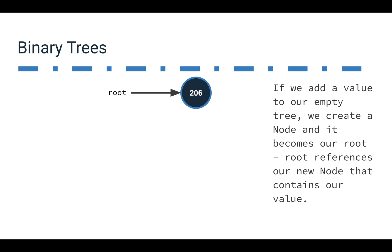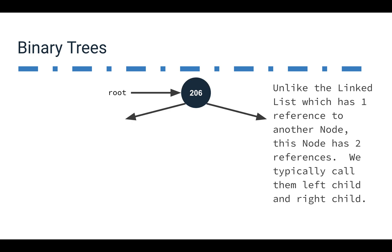The difference is that in a linked list, we have a reference to one other node. With a tree, we actually reference two different nodes: a left child node and a right child node. So right now we have a tree with the root pointing to 206, which has no left child and no right child.